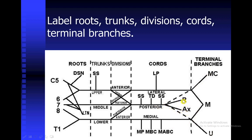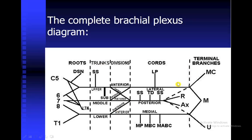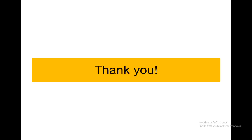One thing we are still missing in this picture: there is a small branch going to a very small muscle under the clavicle, which we call the subclavius muscle — so this is the nerve to the subclavius muscle. That's the brachial plexus. If you have any questions, you can contact me. Thank you.